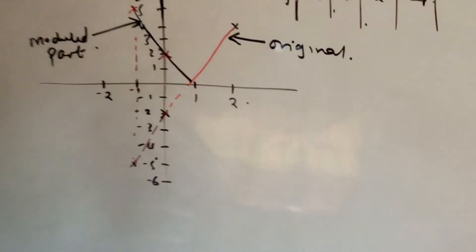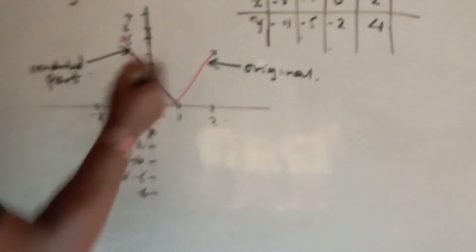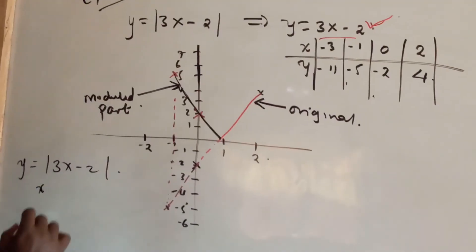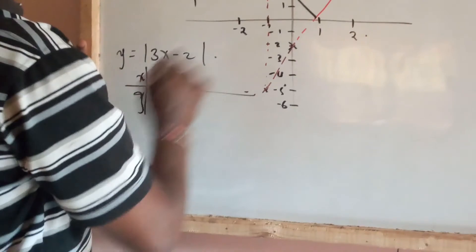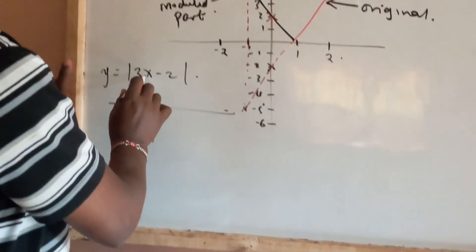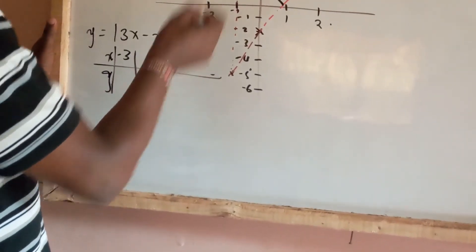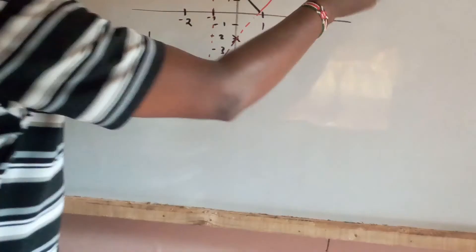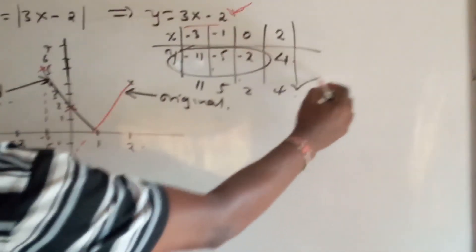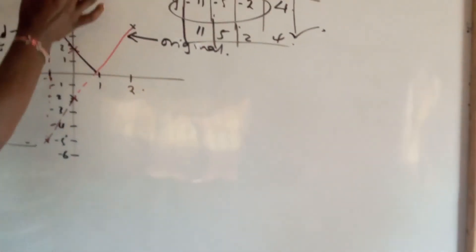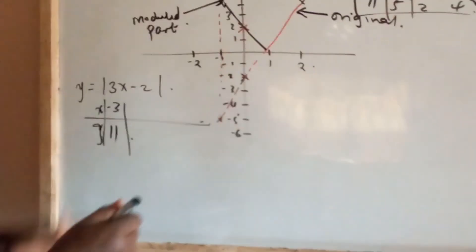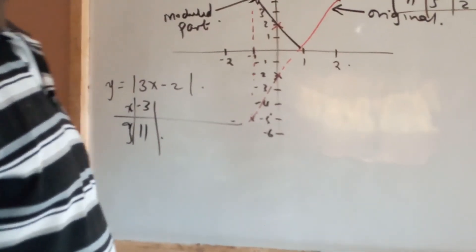You can also tabulate directly for y is equal to modulus of 3x minus 2. When x is minus 3, we get minus 9 minus 2, which is minus 11, and the modulus is 11. All negative y values become positive. If you don't remember the reflection along the x-axis, you can easily tabulate it directly — but remember to take the modulus of all negative values of y.